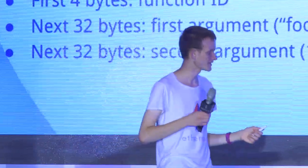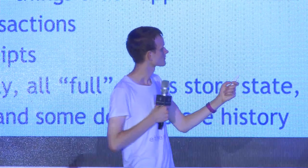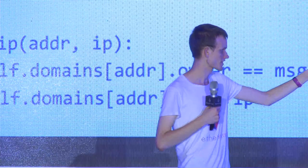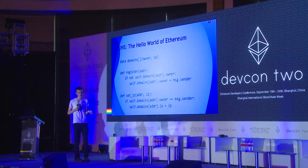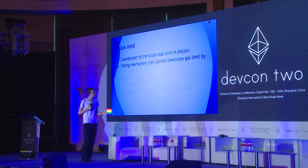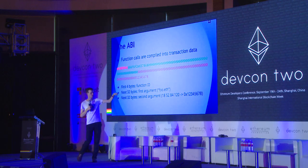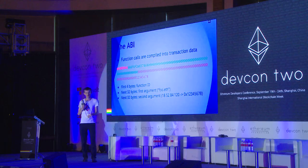ABI: if you want to call a contract and register a domain name, the way you actually make a call is by sending a transaction, and the way you specify what you're calling is in transaction data. There's a standardized algorithm called the ABI by which you encode the data — the first four bytes represent the function ID, then 32 bytes for the first argument, then 32 bytes for the second argument. Variable-sized arguments get more complex.